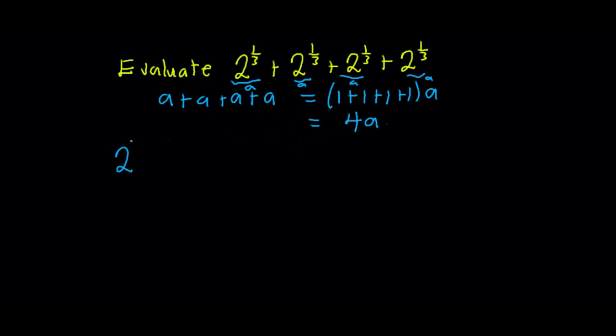2^(1/3) + 2^(1/3) + 2^(1/3) + 2^(1/3) gives us 4 times 2^(1/3), since a represents 2^(1/3).